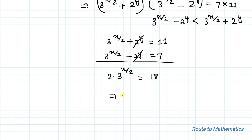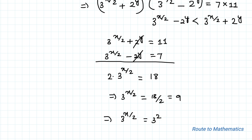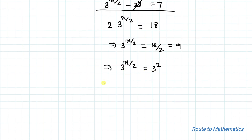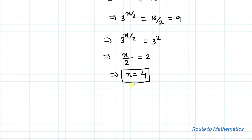This implies 3^(x/2) = 18 ÷ 2 = 9 = 3². Since the bases are the same, we equate the powers: x/2 = 2, so x = 4.